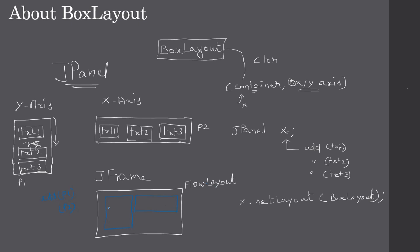Since it's a Flow Layout, it sees the two panels as components and places them from left to right. The box itself is invisible — only the components placed inside it are visible. So ultimately, what you will see are the inner components, such as txt1 and txt2, displayed within the JFrame.